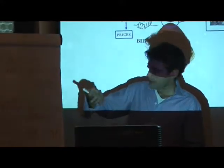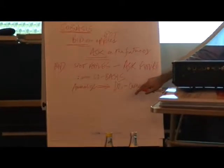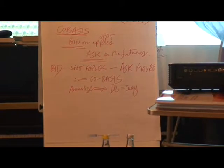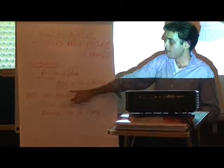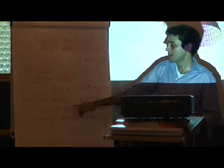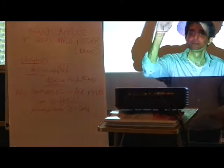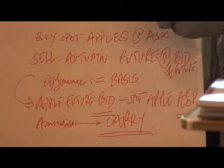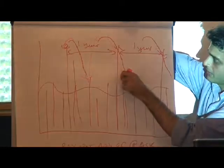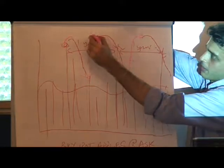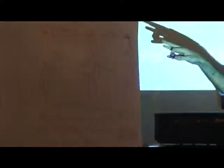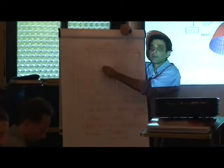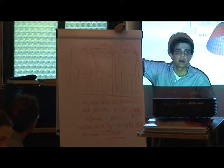So when he unwinds this position — and I'm not talking about the de-carry here — he has a tendency to make the carry rise. Because he's selling apples at the bin. We go back to my previous point: just before harvest, that's where he makes the maximum profit from carrying it. That's where he makes the maximum profit from unwinding the position.